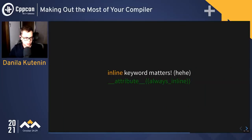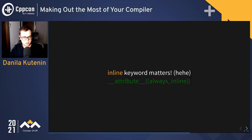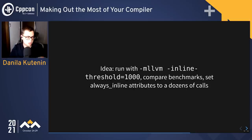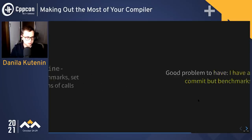There's also a separate attribute called always_inline — a compiler extension that marks functions to always be inlined. I've seen it used in hot paths; be careful with it, but it can be used. An idea I haven't been able to check at large scale but that worked on small scale: compile your project with inline threshold 1000 or 5000, compare benchmarks, and see what has improved. If something improved, just put the always_inline attribute on those calls that were inlined with that threshold and get a clear performance win without a large binary increase.